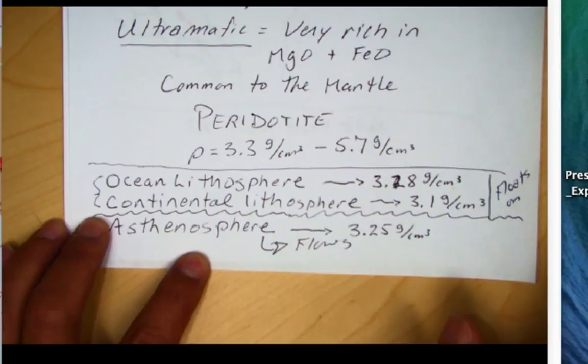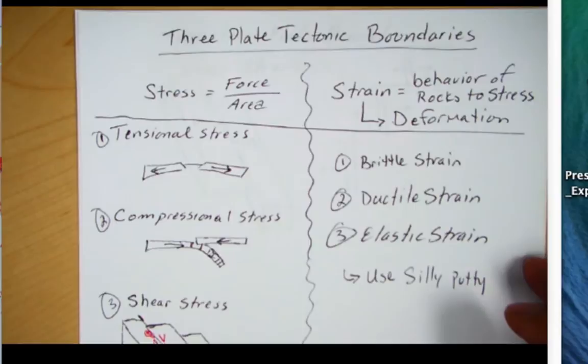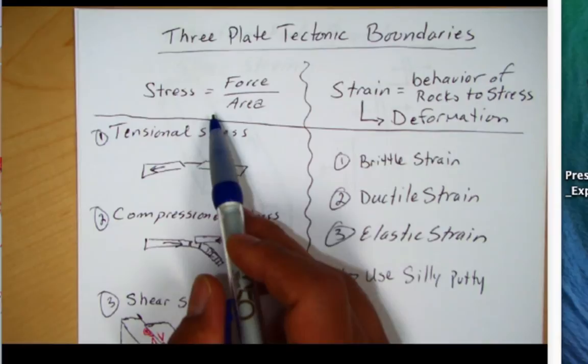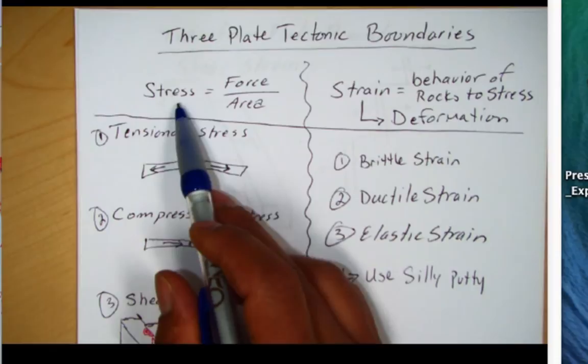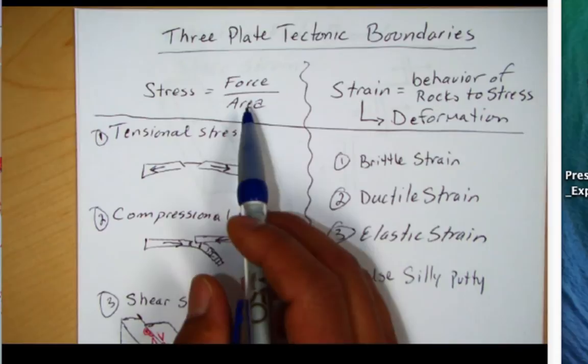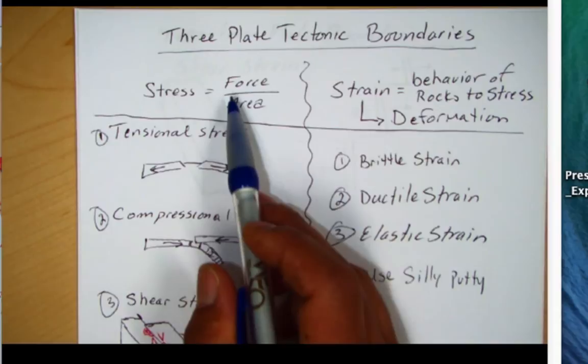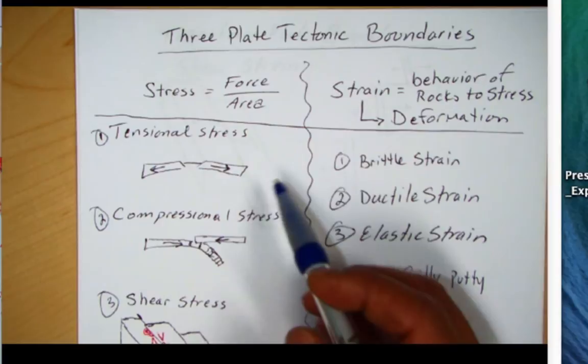For plate tectonic boundaries, before we talk about those, we need to talk about the forces that generate these plate tectonic movements — and so, stress. Stress is a force like a mass over an area, like the Pacific plate working along the area of the San Andreas Transform Fault. There are three types of tectonic stresses.